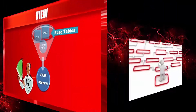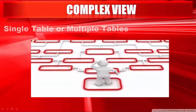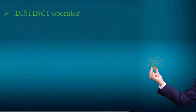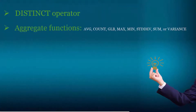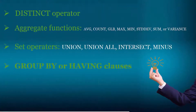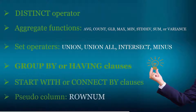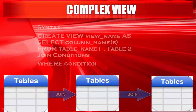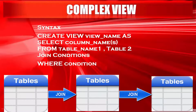Now complex view. A complex view can be created on a single table or multiple tables. It can contain GROUP BY, ORDER BY, CONNECT BY, START WITH, subquery, set operators, DISTINCT keyword, aggregate functions, and pseudocolumns. If you want to create a complex view on a single table, you can use any of these keywords. If you want to create a complex view on multiple tables, you can use joins between two or more tables.